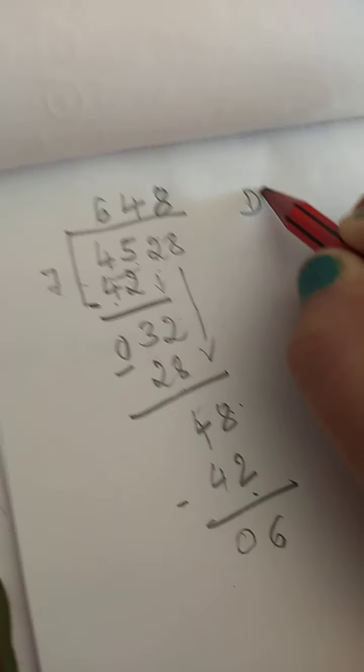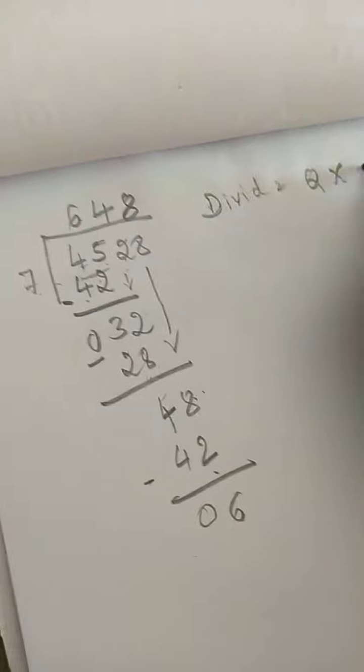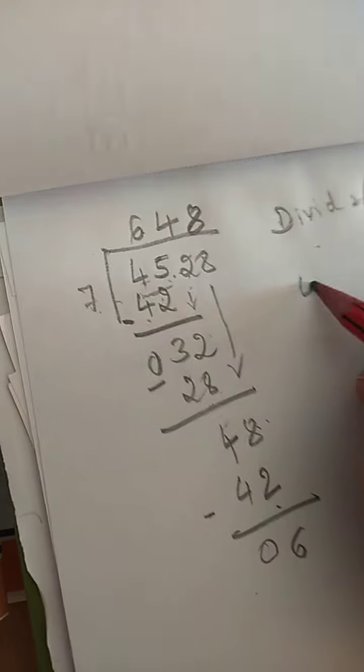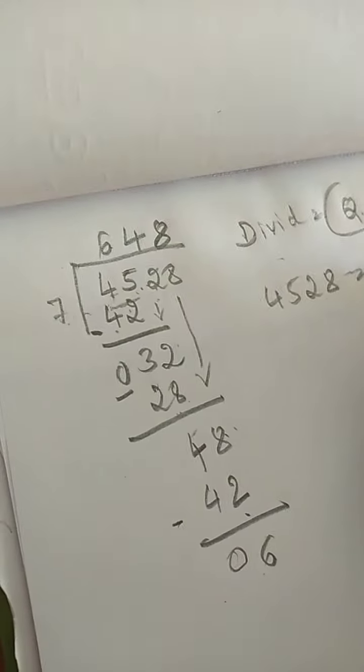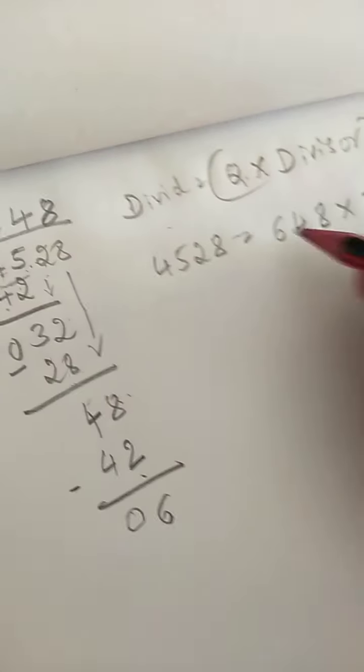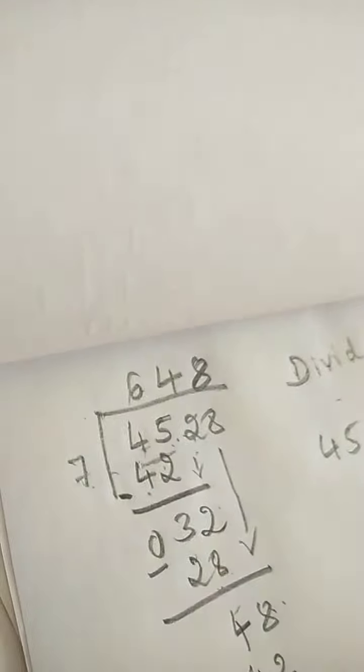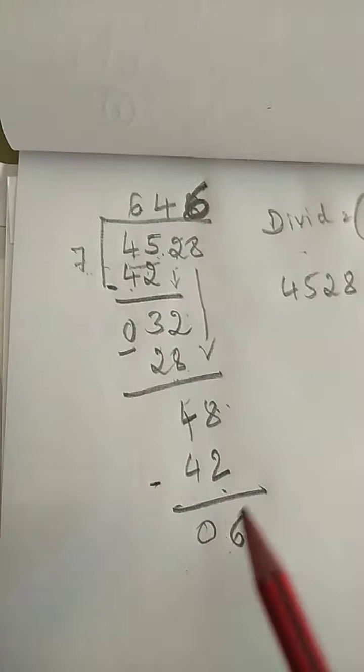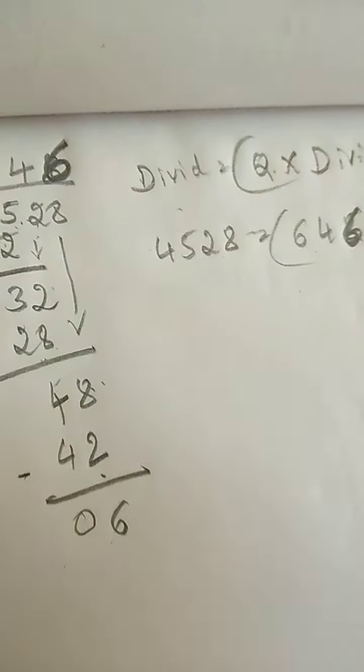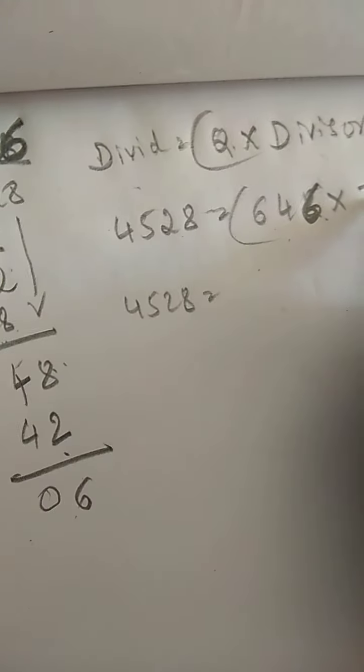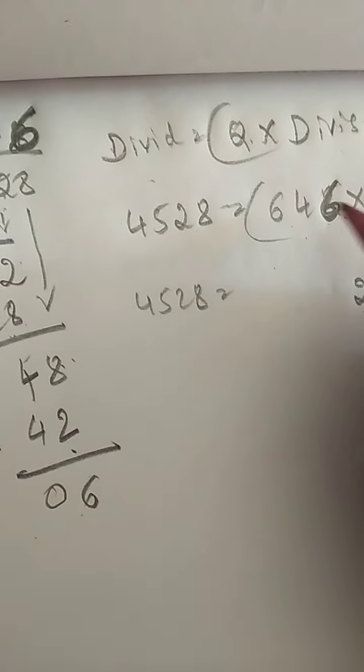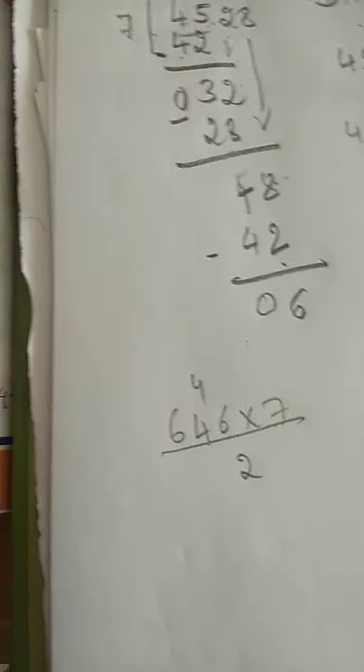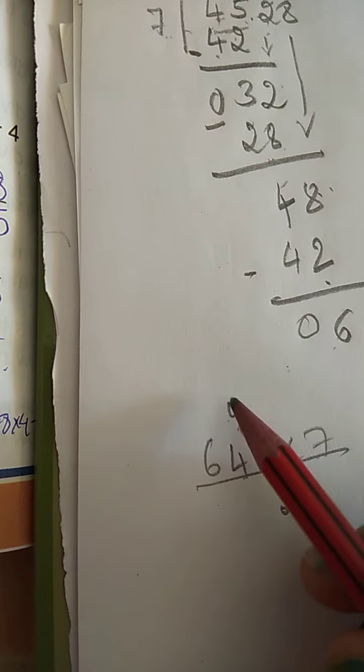Now let's do verification. Verification: dividend is equal to quotient multiplied by divisor plus remainder. So what is the dividend? This is the dividend. So 4,528 is equal to quotient 648 multiplied by divisor is 7. Then plus remainder is 6. So 7 times 6 is 42. Next multiplication. 4,528 is equal to quotient. So let's multiply 6, 7 times 42, 2, 4 carry. 7 times 4 is 28, 29, 30, 31, 32. 2, 3.